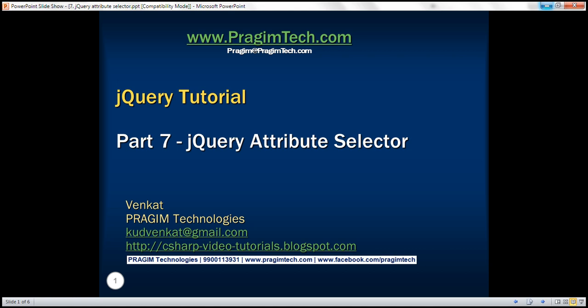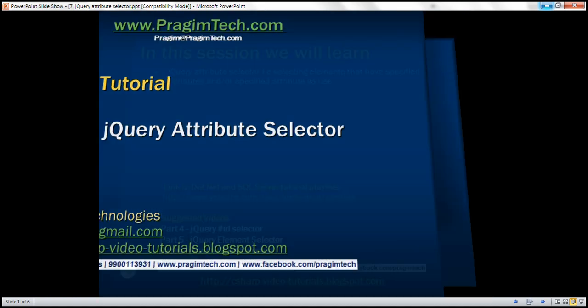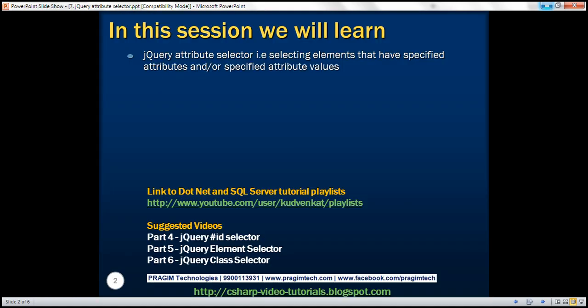This is part 7 of the jQuery tutorial. In this video, we'll discuss the jQuery attribute selector — that is, selecting elements that have specified attributes and/or specified attribute values.